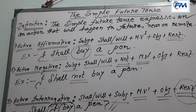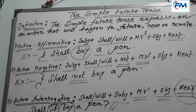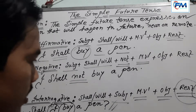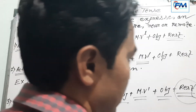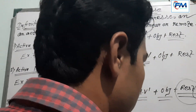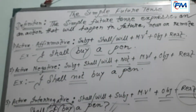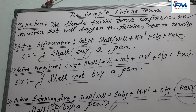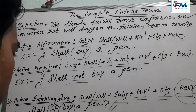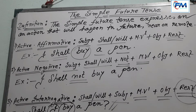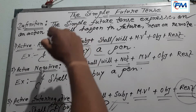Our next rule is active interrogative negative. The structure is: shall/will + subject + not + present form of main verb (MV1) + object + rest + question mark. The example is: 'Shall I not buy a pen?' This sentence belongs to the active interrogative negative part of the simple future tense.